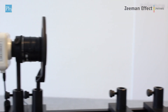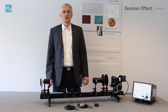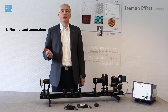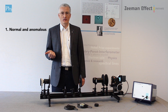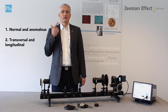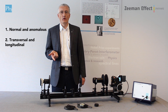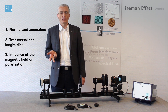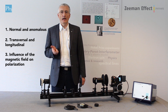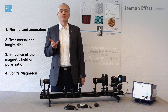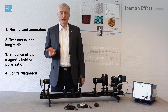You need only one experimental setup to show all phenomena of the Ziemann effect. You can show the following: firstly, the normal and anomalous Ziemann effect; secondly, the transversal and longitudinal Ziemann effect; also, the influence of the magnetic field on polarization. And you can also determine the Bohr magneton, which is a fundamental physical constant.